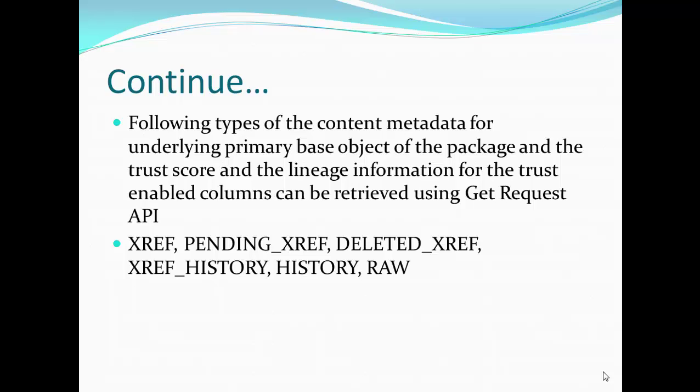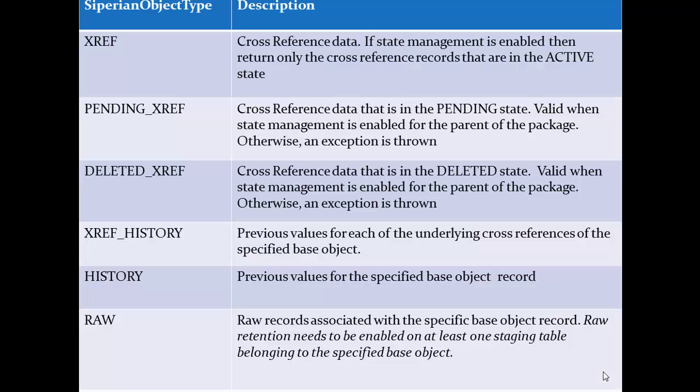Let's go into detail on these object types. Cross-reference — that is nothing but the cross-reference data. We can retrieve the cross-reference data using the Get API. If you enable state management, then only active records from the cross-reference will be returned.